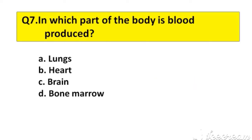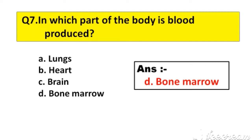Question number 7. In which part of the body is blood produced? A. Lungs, B. Heart, C. Brain, D. Bone Marrow. The right answer is option D, Bone Marrow.